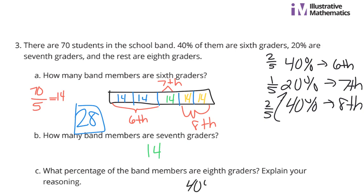And what percentage of the band members were eighth graders? I already answered that up here at 40%. And again, the reason, 40% plus 20% was 60%. The rest of them were eighth graders, and 100% was the total. Minus 60 gets us 40%. Continuing on to question four.